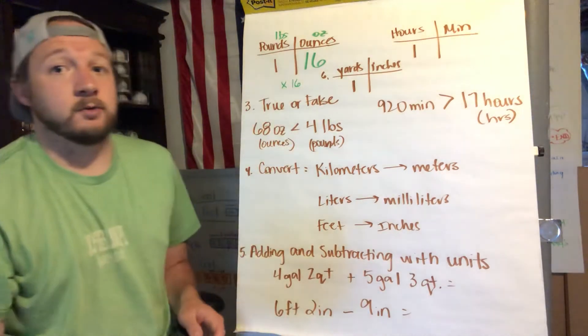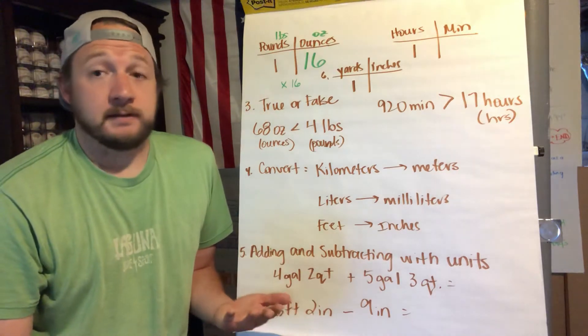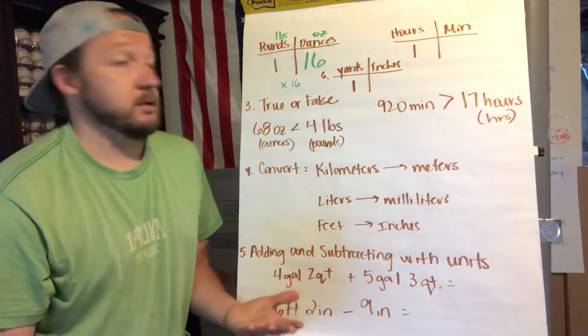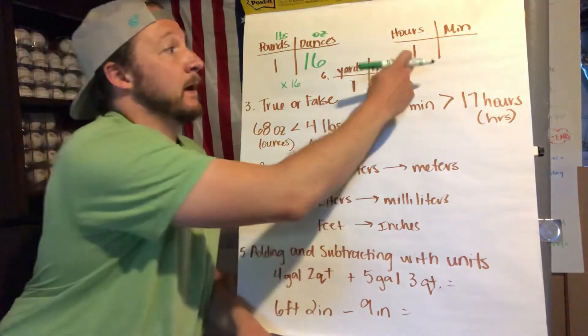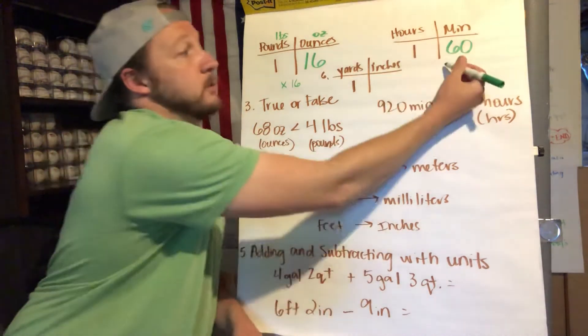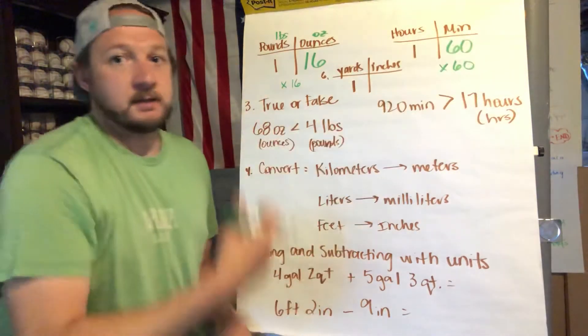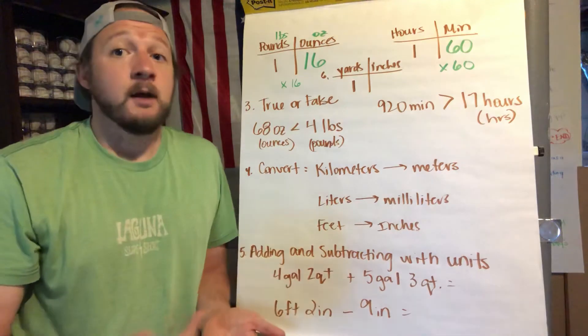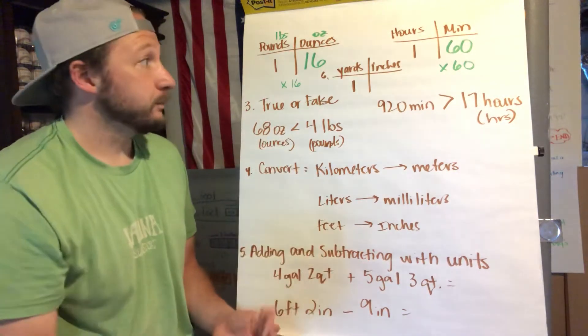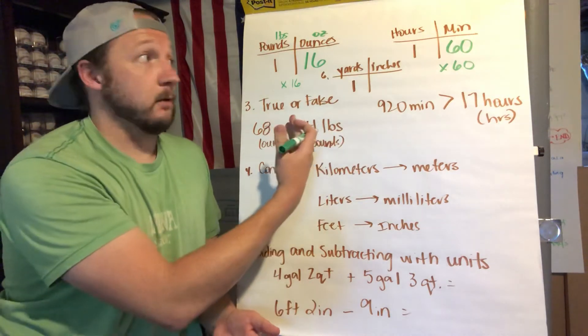So one pound is 16 ounces, so then for every pound you have to multiply by 16. So if you want to know two pounds, you do two times 16 to get the answer. So you multiply by 16. The next one is hours to minutes. This one should be pretty simple because we use hours and minutes on a daily basis.